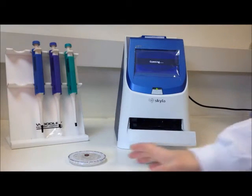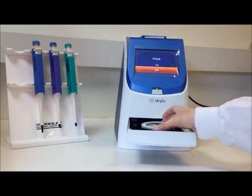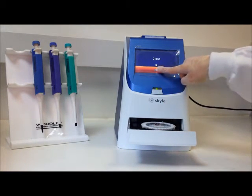Hold the rotor by its edge with the barcode facing up and the rotor kept level. Avoid touching the surface of the rotor and gently place the rotor into the drawer. Press OK to close the rotor drawer.